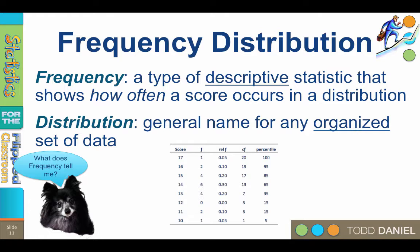In this frequency table that I created, we can see that the range of scores is from 17 down to 10. We can also see the frequency for each score.